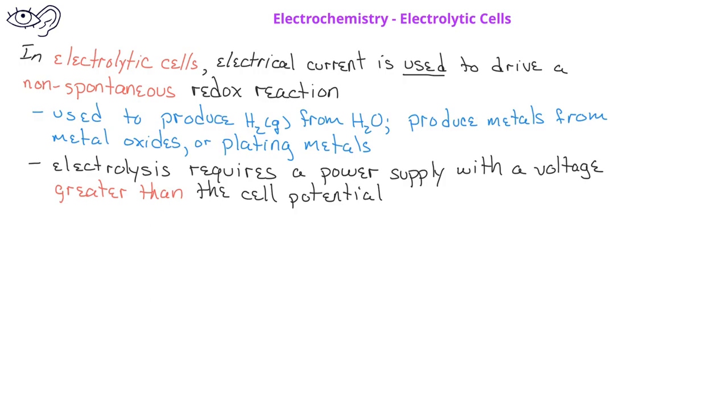When comparing voltaic and electrolytic cells, we should recall that in both kinds of cells, oxidation takes place at the anode, and reduction takes place at the cathode.